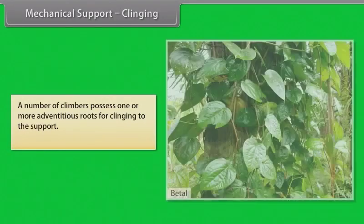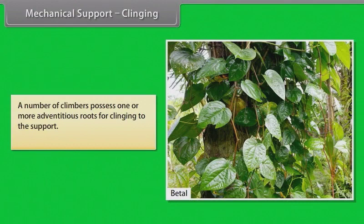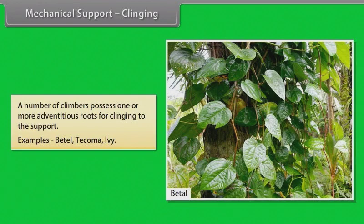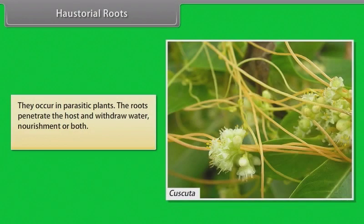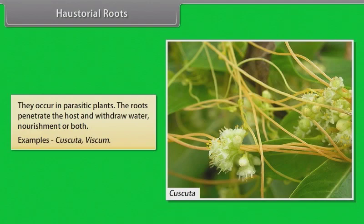Mechanical support and clinging: A number of climbers possess one or more adventitious roots for clinging to the support. Examples: betel, Tecoma, ivy. Haustorial roots: They occur in parasitic plants. The roots penetrate the host and withdraw water, nourishment or both. Examples: Cuscuta, Viscum.